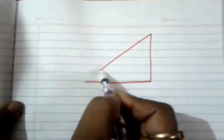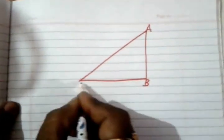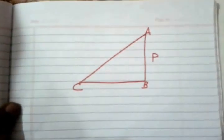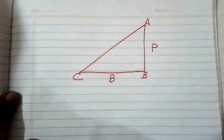This is a right angle triangle ABC. This is called perpendicular or P, this is called base or B, and this is called hypotenuse or H.